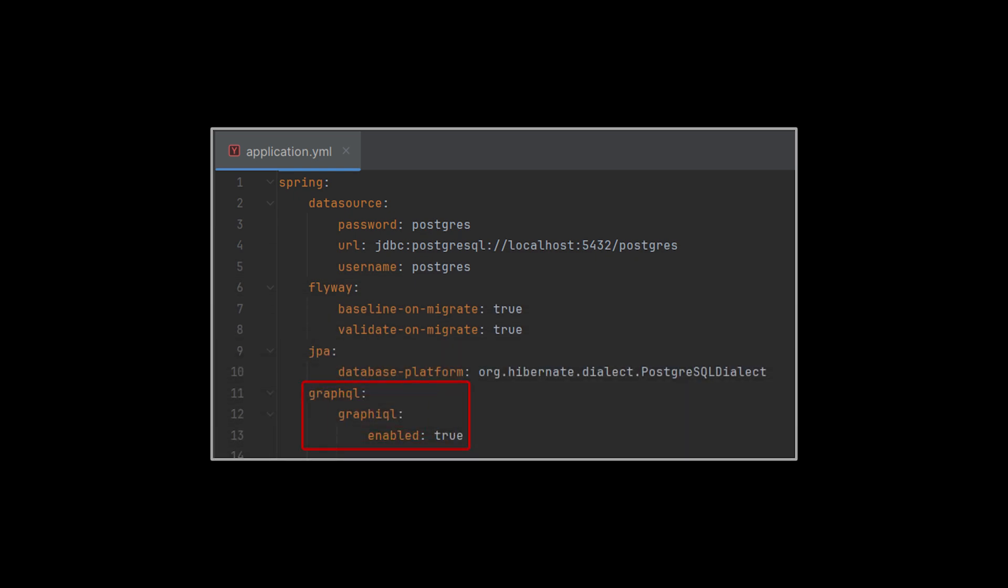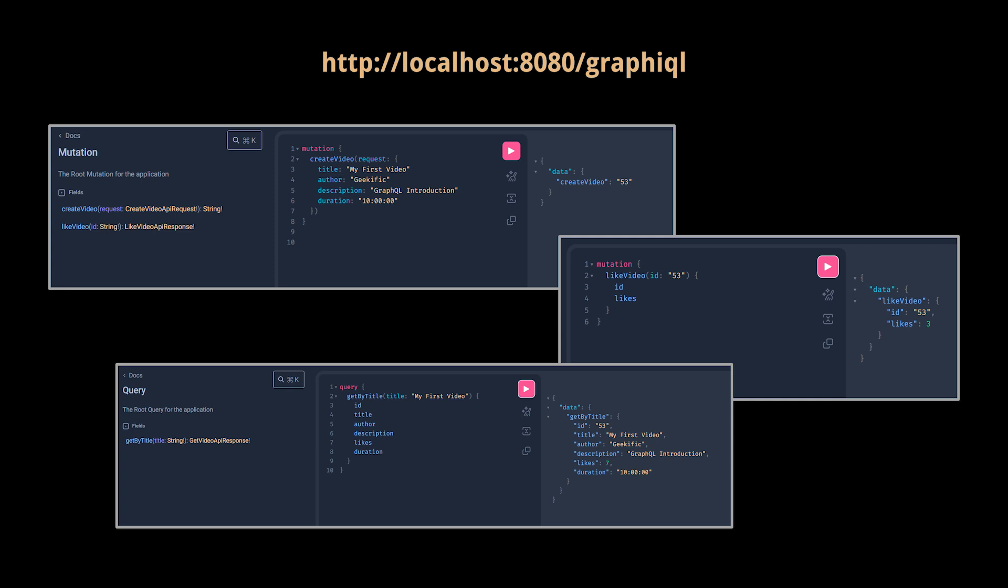Okay, the final change to our project is to add the Spring Boot configuration we see to the application.properties or yaml file. Now run the application and navigate to localhost/graphiql.